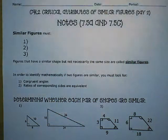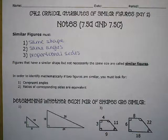Today we are working with Day 2 of Critical Attributes of Similar Figures to determine if two shapes are similar and to find a missing side length. There are three things that similar figures must have. I will give you a minute to fill out these three things and then we will check them. Did you get that they had to be the same shapes, same angles, and proportional size? If you did, great job.